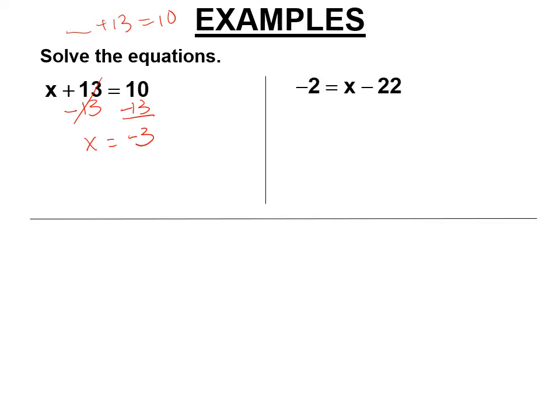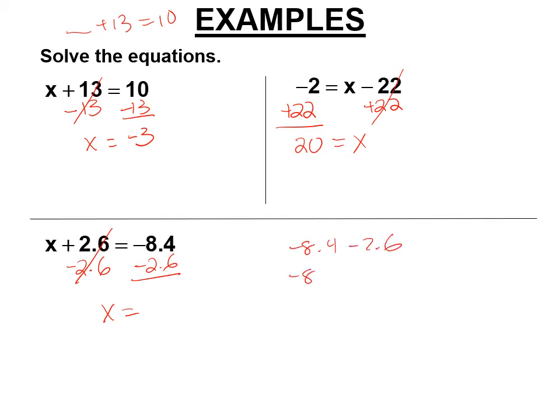Next. So it's subtract 22. So we're going to add 22 to both sides. So it's negative 2 plus 22. Positive 20 is the only number that makes that true. Subtract 2.6 from both sides. And so negative 8.4 minus 2.6, I'm going to write this out a little bit. That's the same as adding negative 2.6. They're both negative. So it's negative 11 is what makes that true.